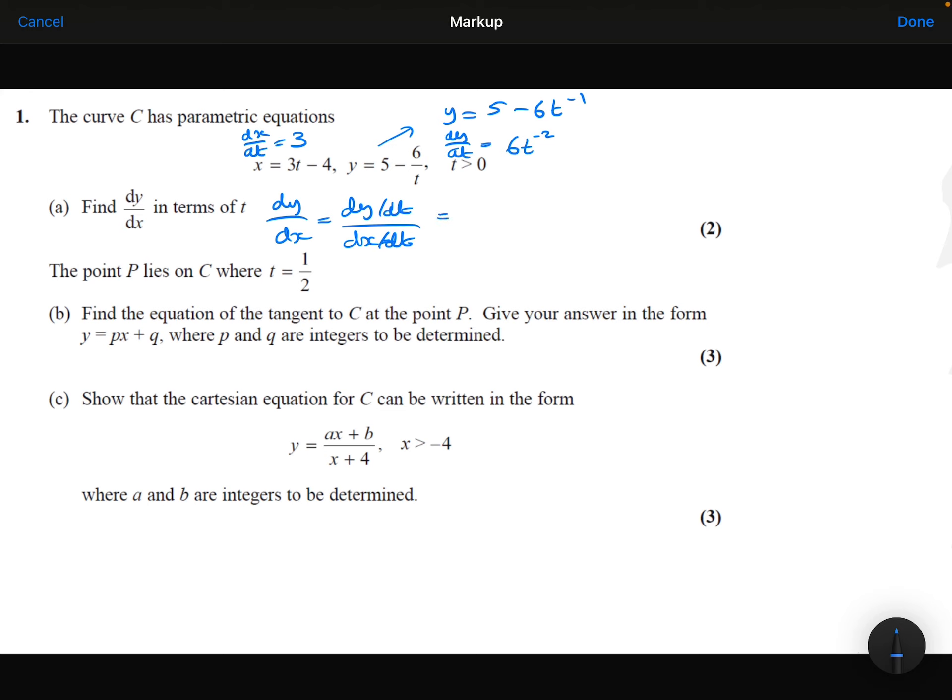So substituting each of those into my gradient function, I'll get 6t to the minus 2 divided by 3, which is the same thing as 2t to the minus 2, or 2 over t squared. That is my dy by dx in terms of t.